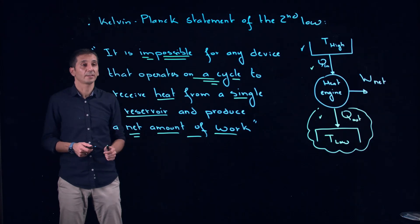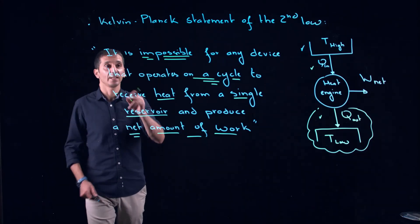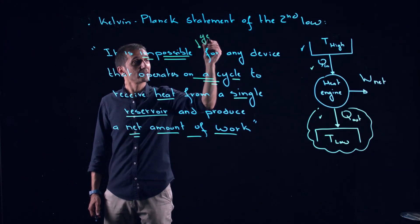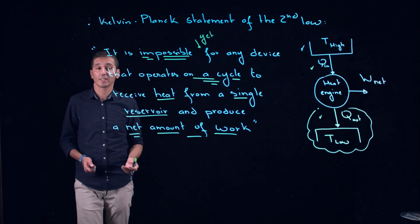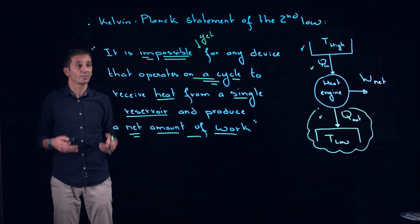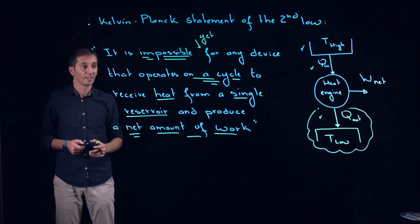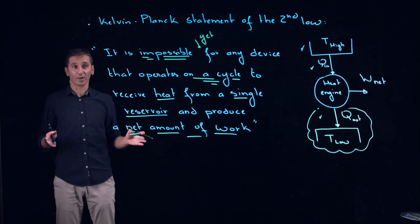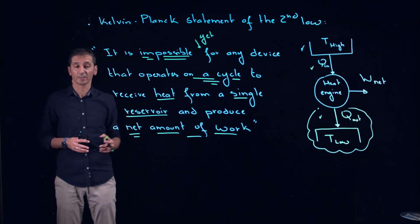The only thing I'd like to add to the statement is 'it is impossible yet,' because in science we never know. Several laws were supposed to tell us that things are impossible and they ended up being wrong. So far, it is impossible for any device that operates on a cycle to receive heat from a single reservoir and produce a net amount of work.